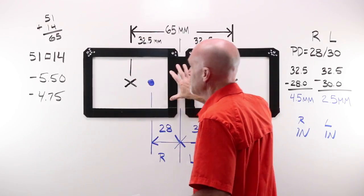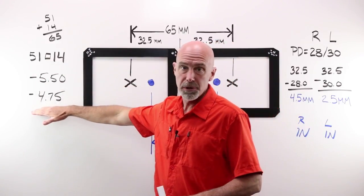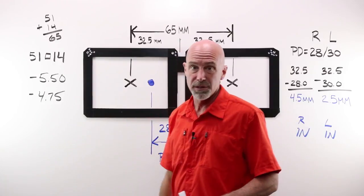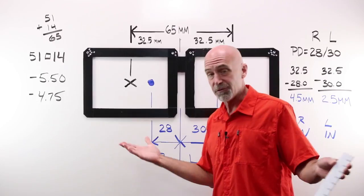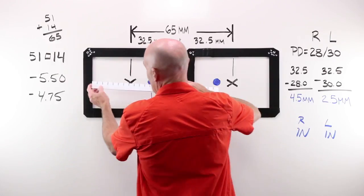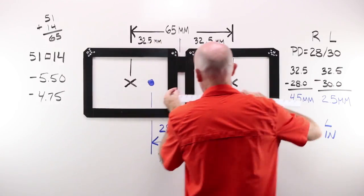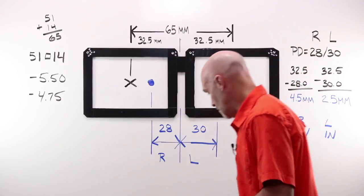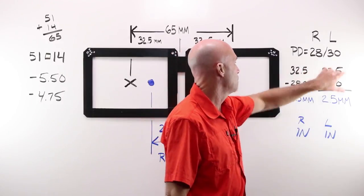I have got super frame, super frame has a boxing system measurement of 51-14. My powers are creeping up. I need to be a lot more careful with things than I would be if that was a .50 and a .75. So I'm going to double check this measurement. If you're not familiar with the boxing system, watch the video on the boxing system. I'm going to make sure that my A is 51 and it is, and I'm going to make sure my DBL is 14, which it is, so we're good to go there.